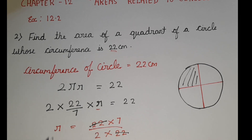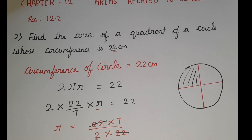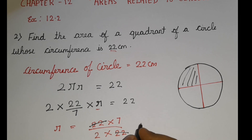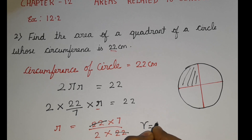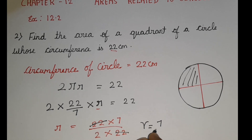When I cancel them, the rest of the values are 7 and 2. Then the radius is going to be 7/2. Finally, we got the radius.